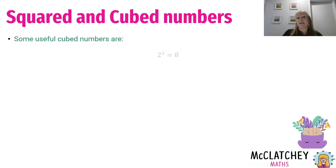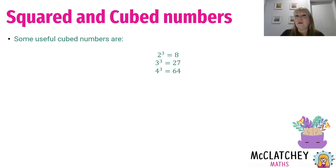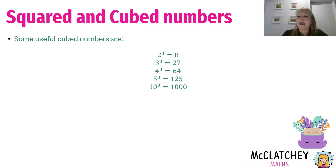Some useful cube numbers: two to the power of three — two times two makes four, times two makes eight. Three to the power of three: three times three is nine, times three is 27. Four to the power of three: four times four is 16, times four is 64. Five to the power of three: five times five makes 25, times five makes 125. And another useful one is 10 to the power of three, which makes 1,000.